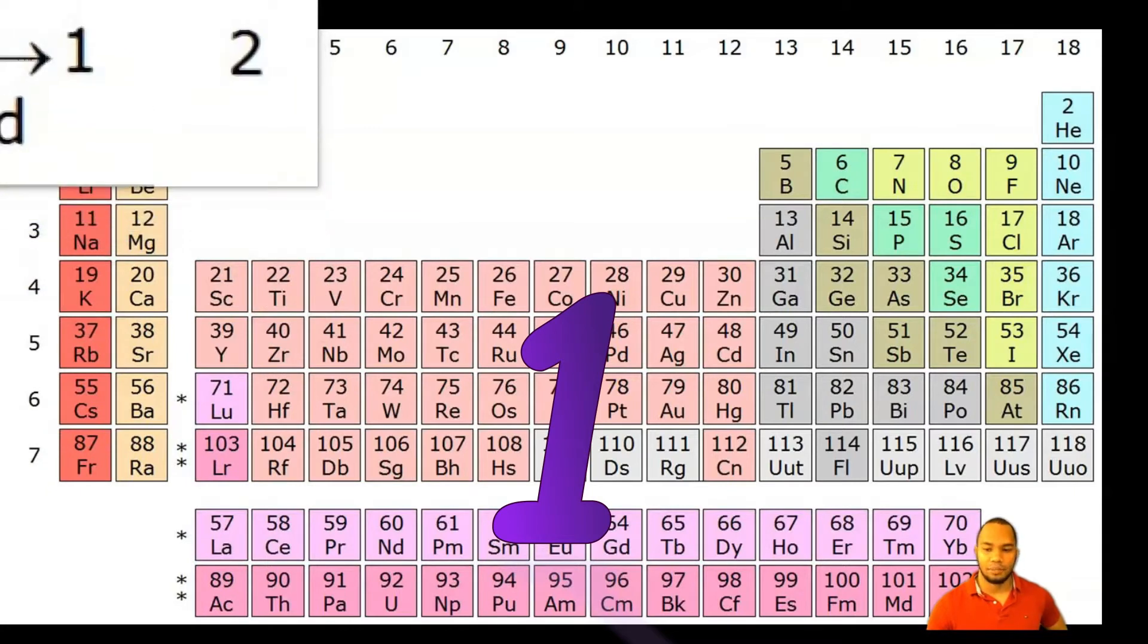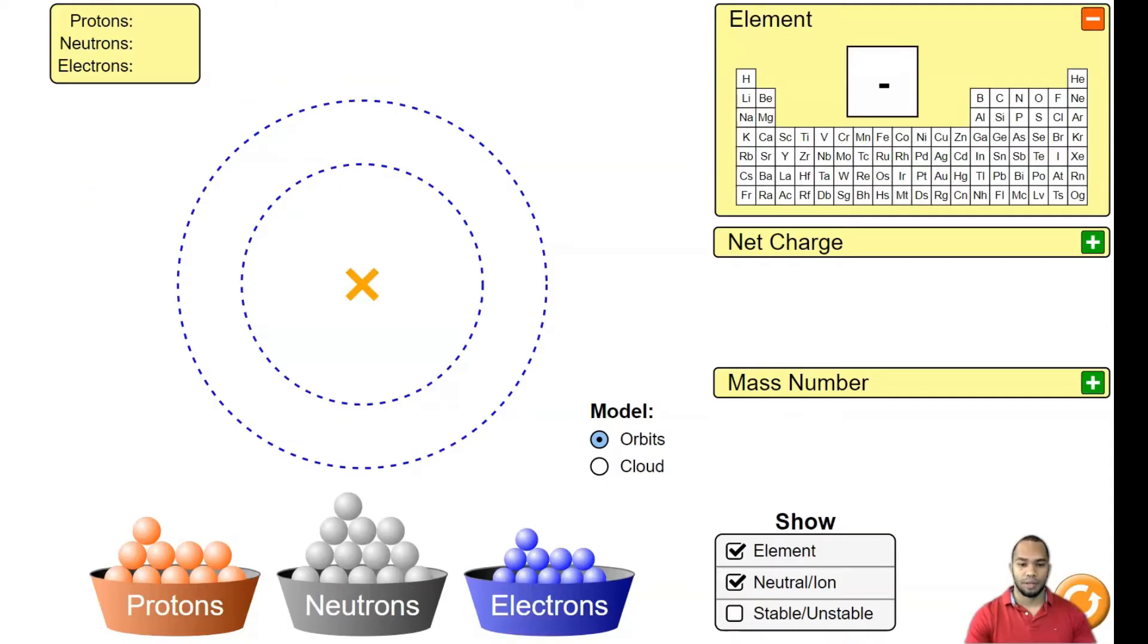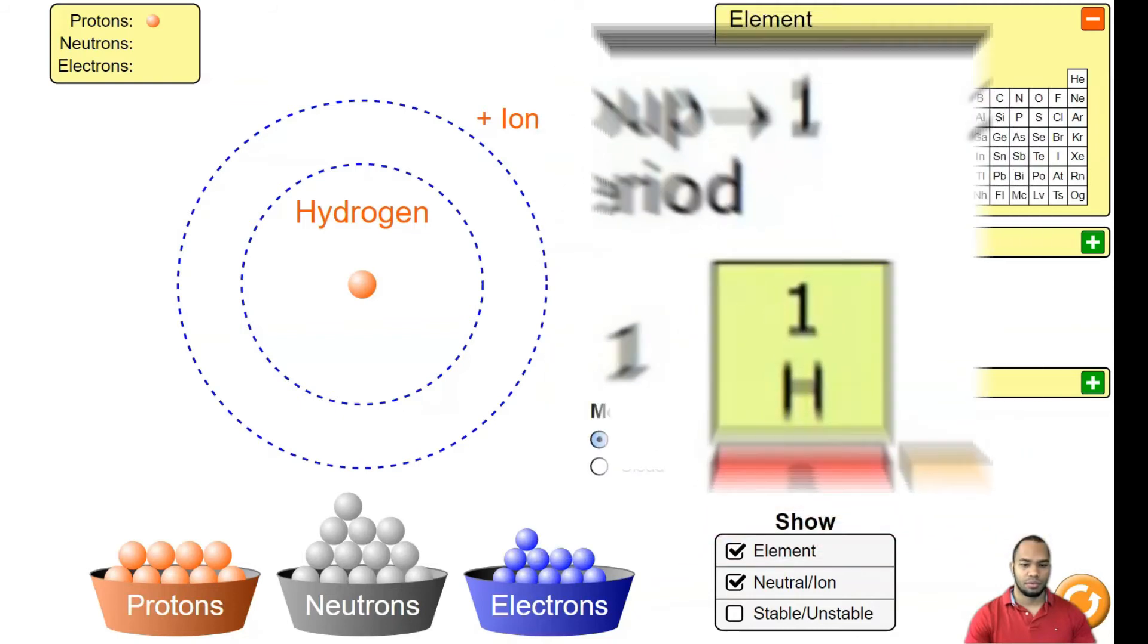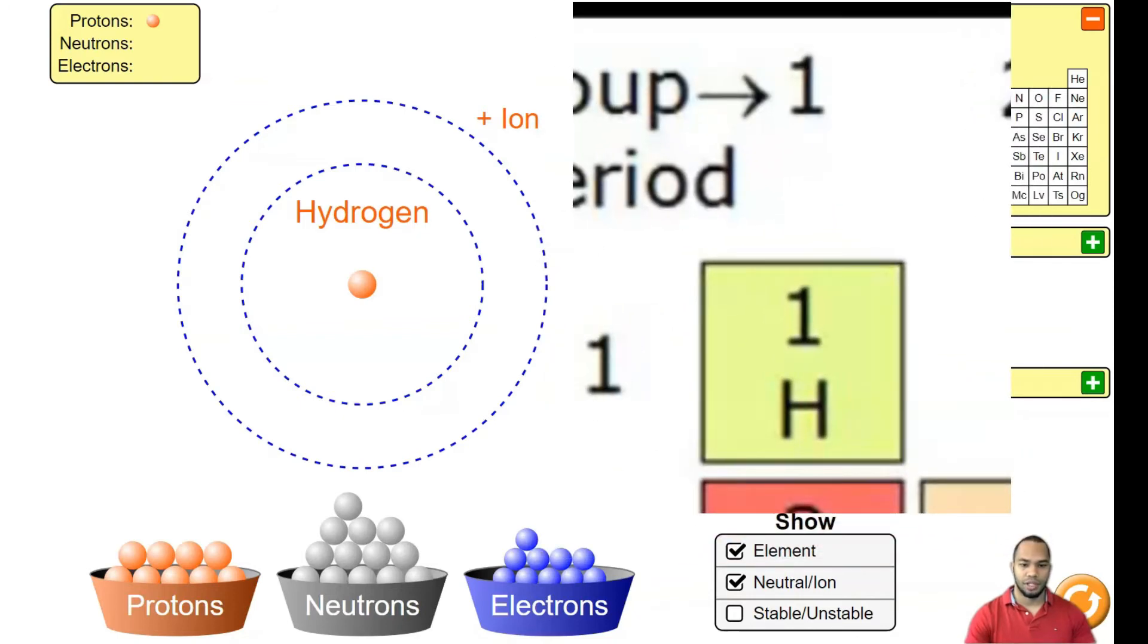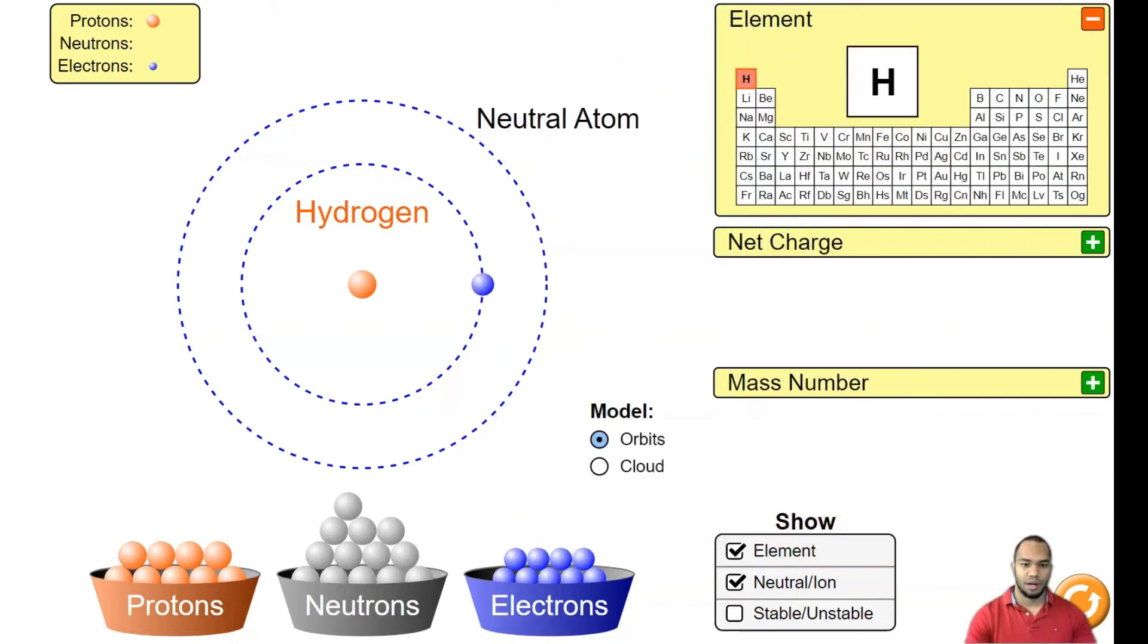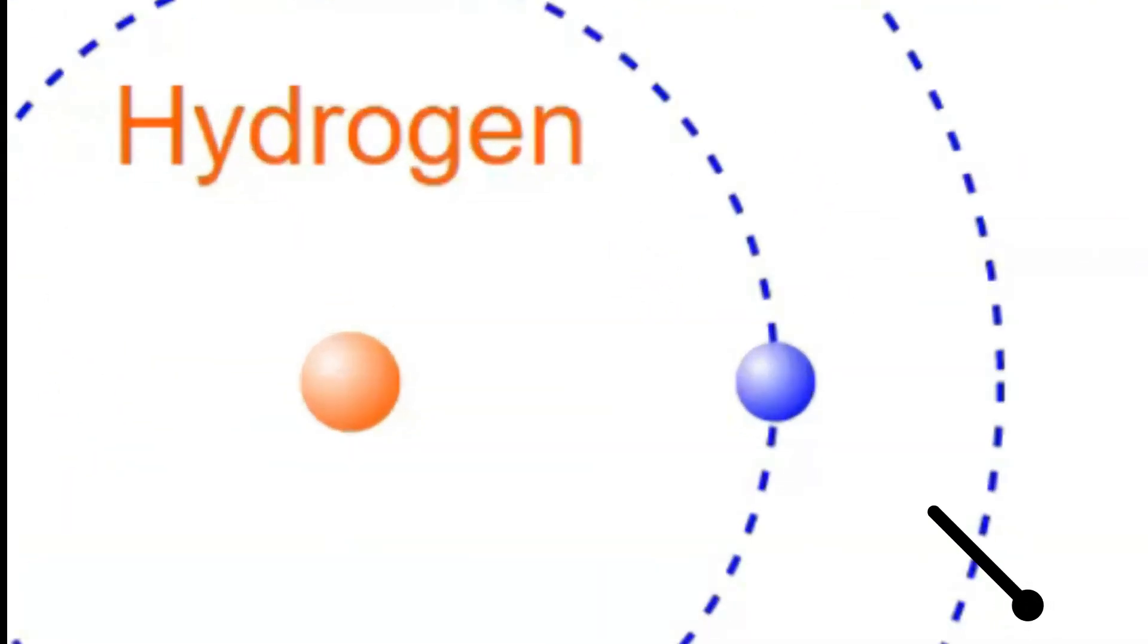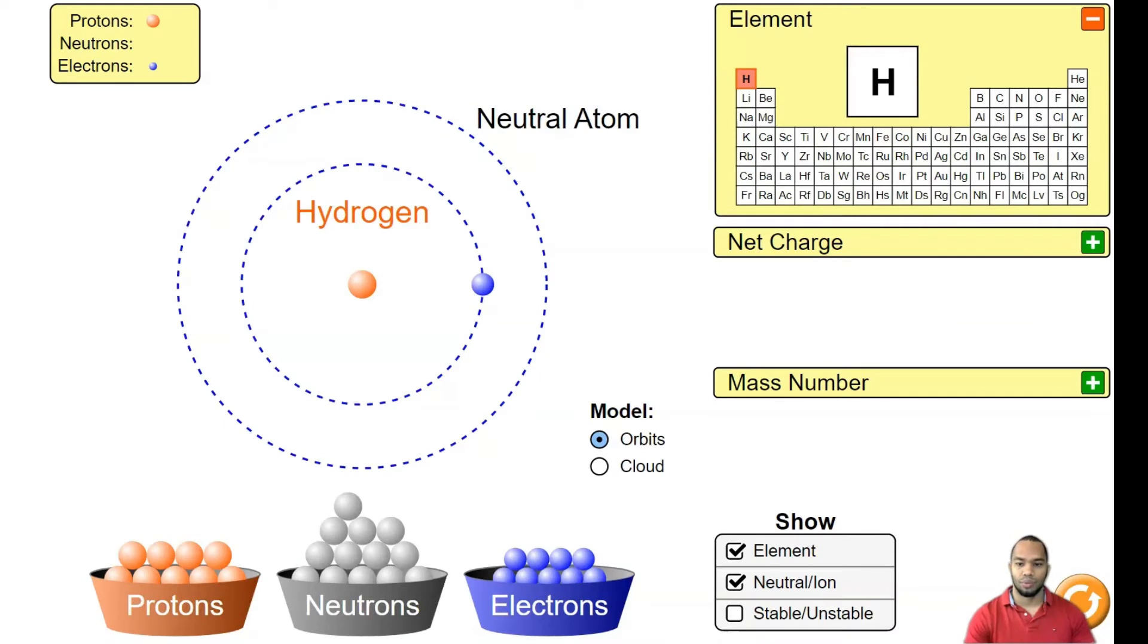Let me show you what I mean. When we build hydrogen, hydrogen is in what group? Group one. So let's build hydrogen: one proton, one electron. Notice it has how many electrons in its outer shell? It only has one. That's why it's in group one.